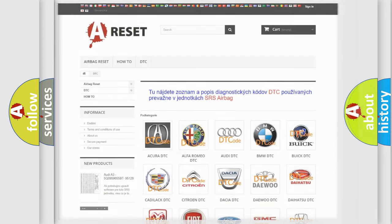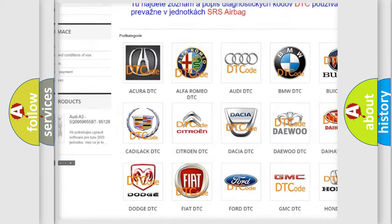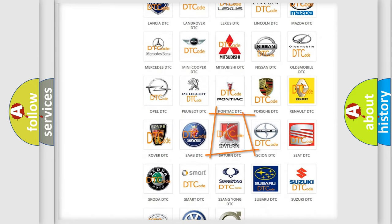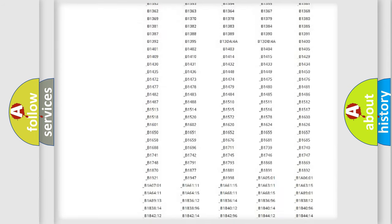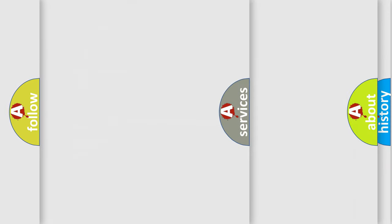Our website airbagreset.sk produces useful videos for you. You do not have to go through the OBD2 protocol anymore to know how to troubleshoot any car breakdown. You will find all the diagnostic codes that can be diagnosed in Saturn vehicles, and also many other useful things.